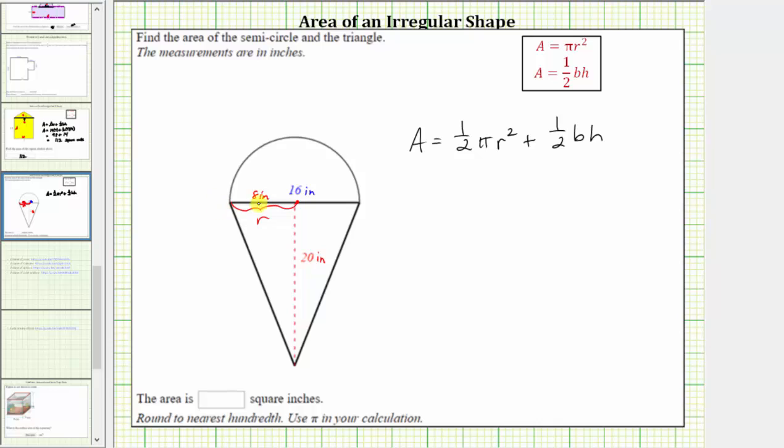The 16 inches, which is the diameter of the semicircle, is also the base of the triangle. Let's label this b. And then 20 inches is the height of the triangle. Let's label this h. This is all the information we need to find the total area.